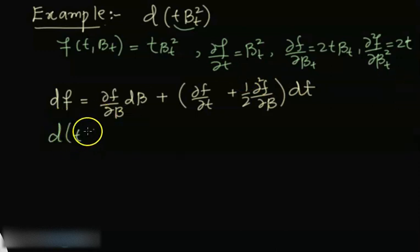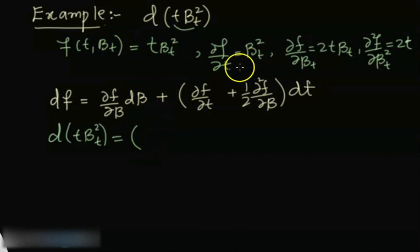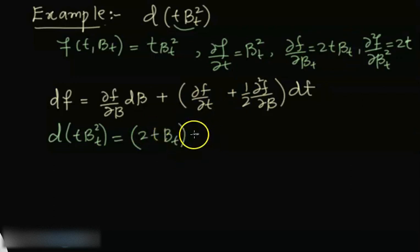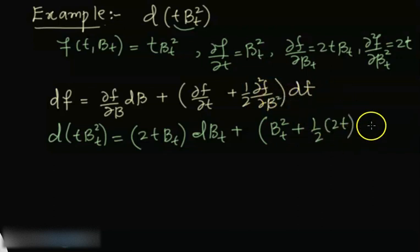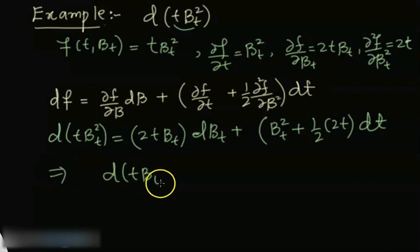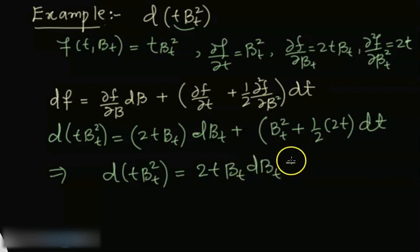So we get d(t times B_t squared) equal to: the first partial derivative of f with respect to B, which is 2t times B_t, times dB_t, plus the partial derivative of f with respect to t, which is B_t squared, plus one-half times 2t — that is t — times dt. So the differential of t times B_t squared equals 2t B_t dB_t plus (B_t squared + t) dt.